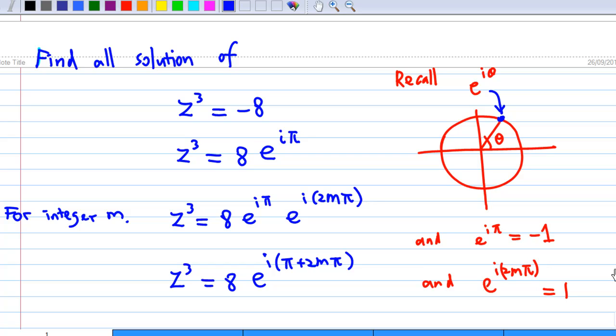Now what we do is express the number minus 8 into exponential form. You know that minus 8 is 8 times e to the i pi. Why is that so?